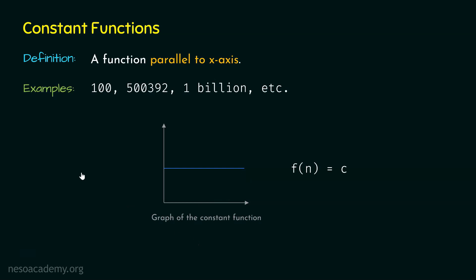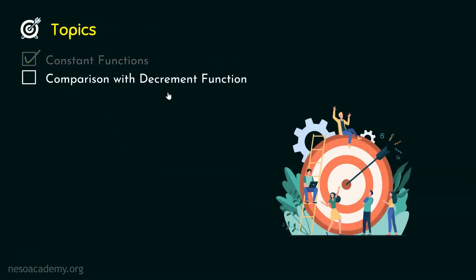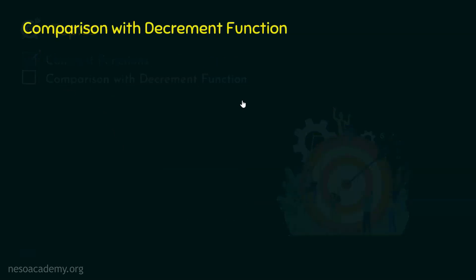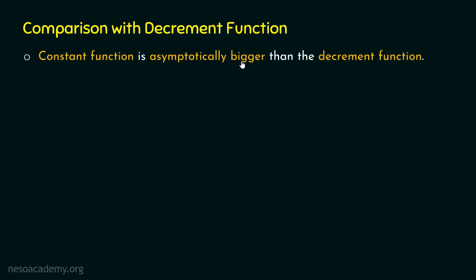Now we know what constant functions are. Let's compare constant functions with decrement functions. A constant function is asymptotically bigger than the decrement function. To understand why, let's take one simple problem and through that problem we will try to understand why the constant function is asymptotically bigger than the decrement function.